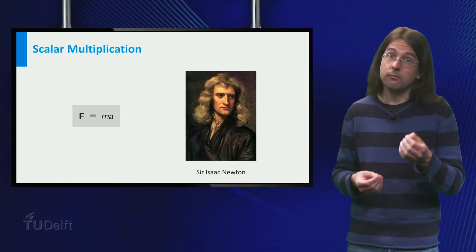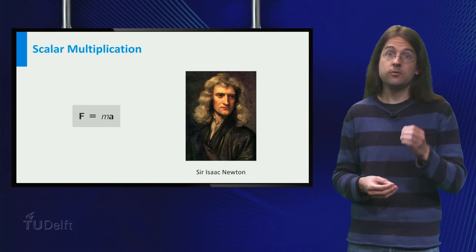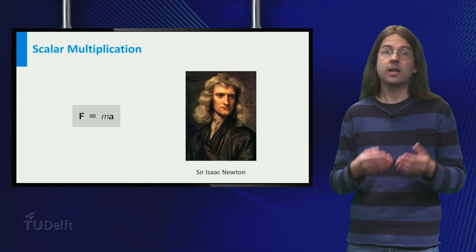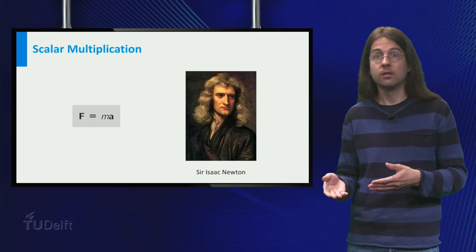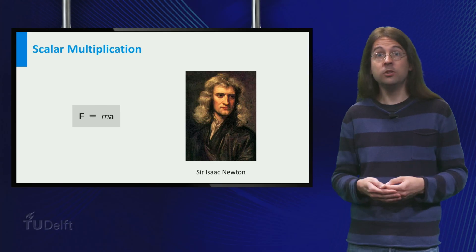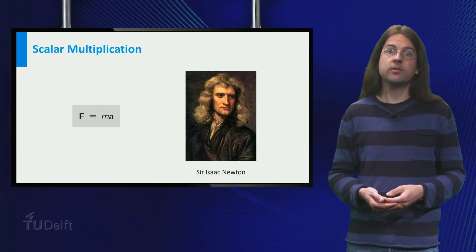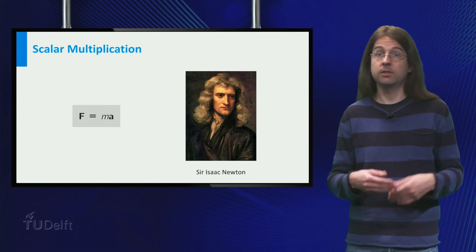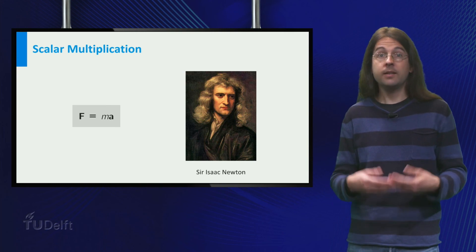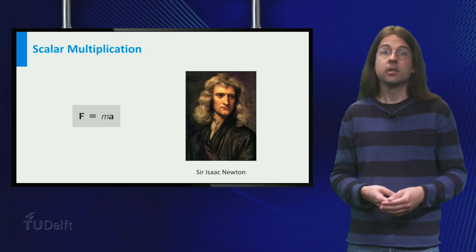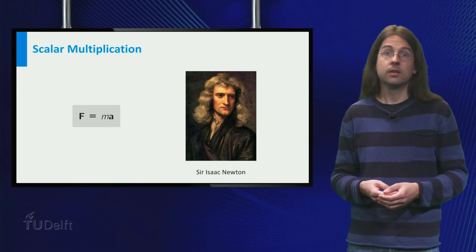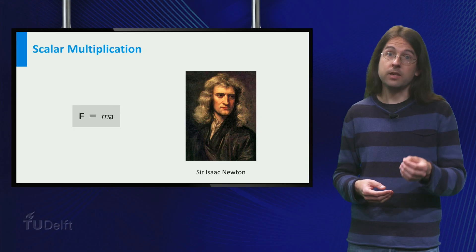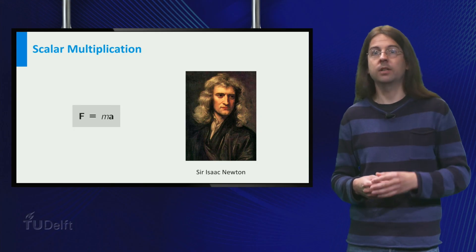One application that involves scalar multiplication is Newton's second law of motion, f equals m times a. Here f is a force, and as we explained this is a vector. m is the mass of an object, which is a scalar, and a is the acceleration, which is again a vector. Indeed, acceleration has a direction as well as a size.